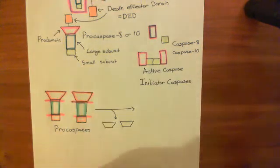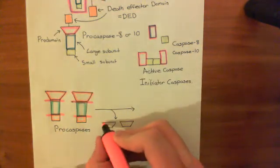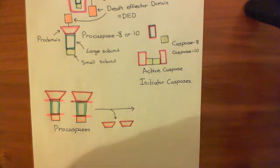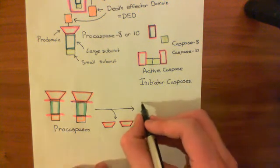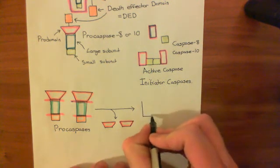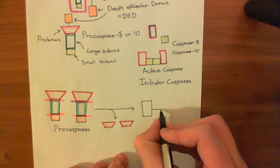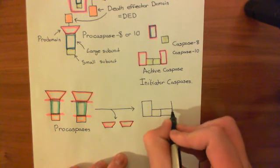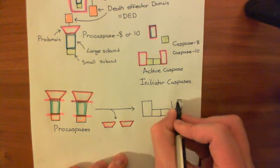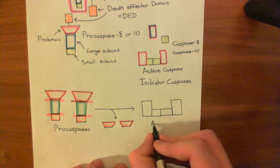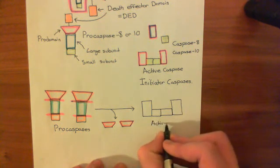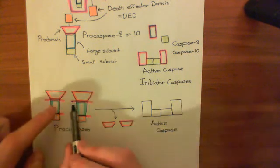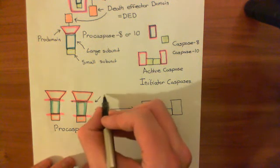I'll just color them in red. So the pro-domains are here. And then what happens is these two large subunits and two small subunits can then associate together to make an active caspase. I want to stress that this process can happen for any caspase. This is a general process. So here's the active caspase. The way in which you convert two pro-caspases into an active caspase is you chop at these two cleavage sites.